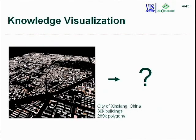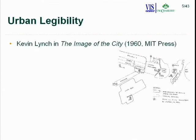We want to take this idea of knowledge visualization and apply it to urban models. Here's a model of a city in China, and the question is: what is the knowledge in this scene — what do we want to preserve and highlight? To answer that, we turn to the idea of urban legibility, a term made famous by Kevin Lynch in his 1960 book, The Image of the City.